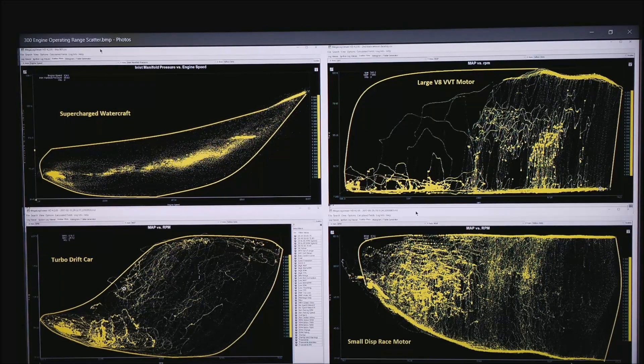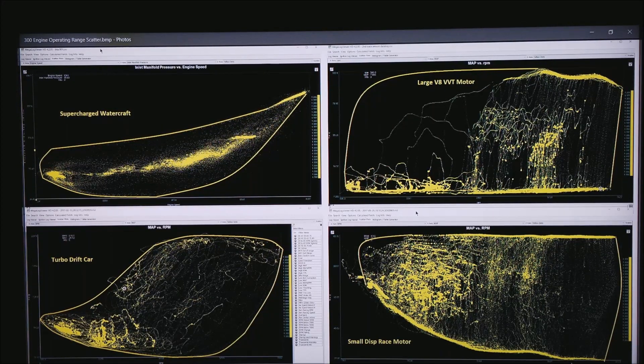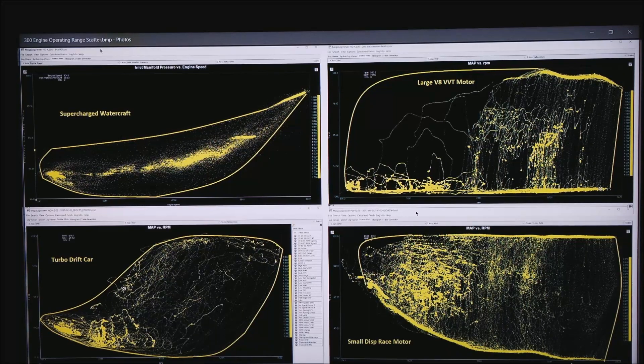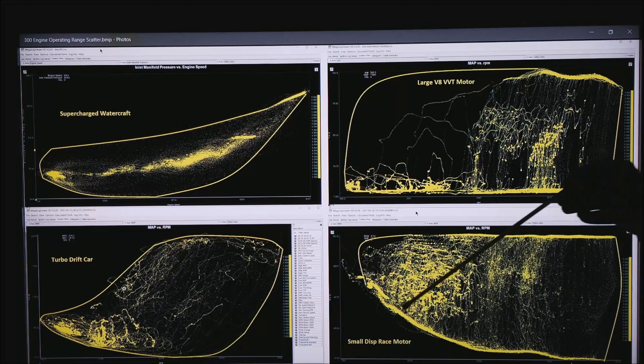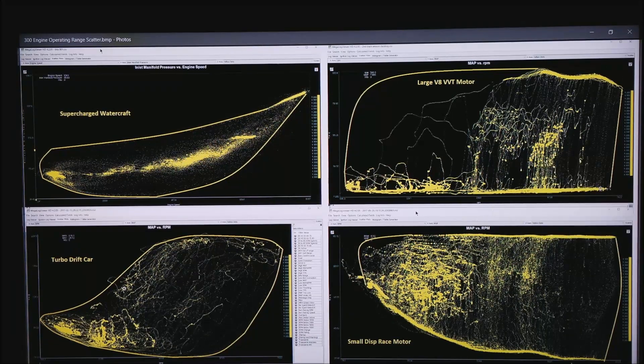That happens to be maybe his IAC valve got caught in the wrong position. All sorts of things can cause that but he spends very little time there but again you'd want a VE number that's reasonable in that area. You'll never get there on a dyno.